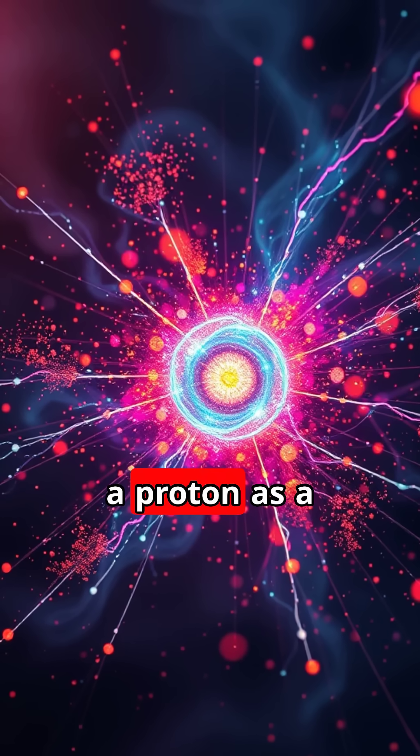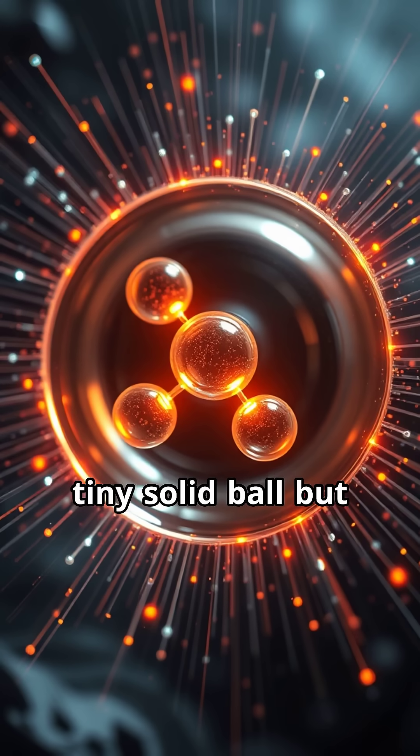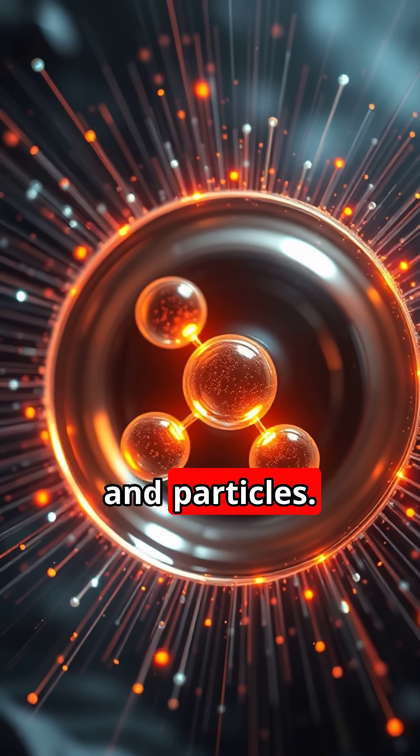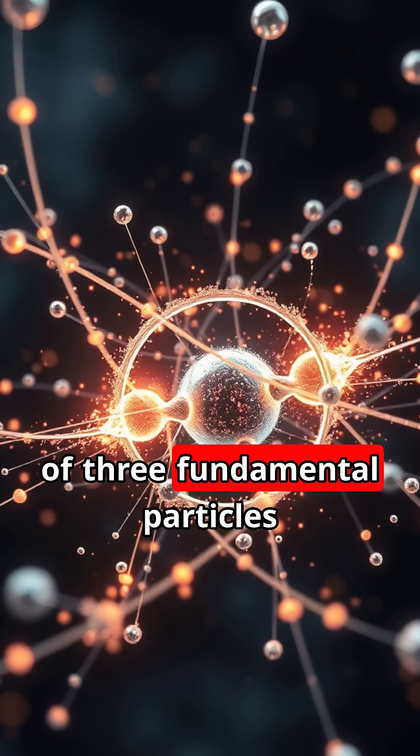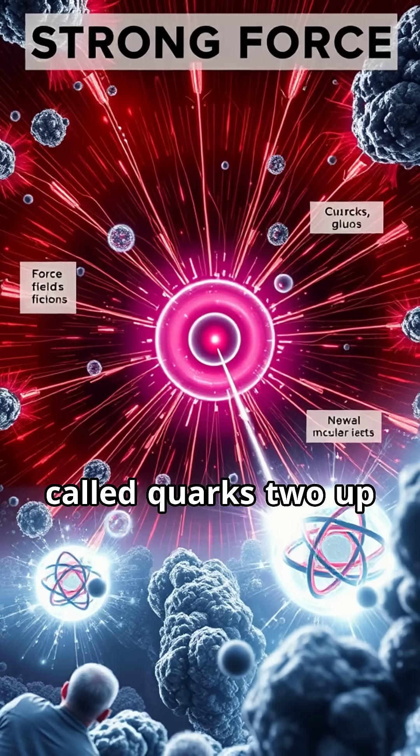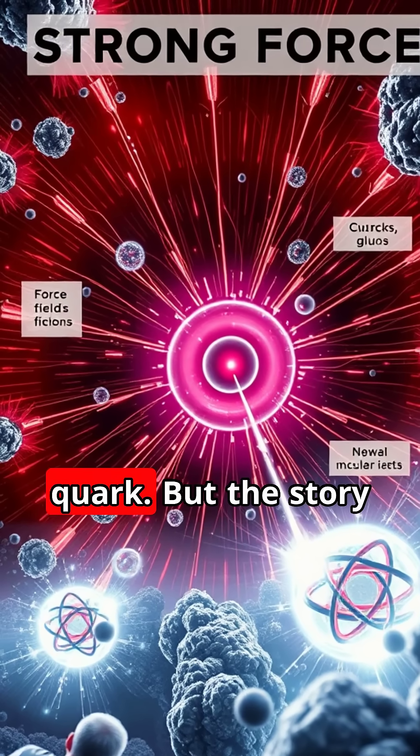You might picture a proton as a tiny, solid ball, but it's actually a swirling storm of energy and particles. At its core, a proton is made up of three fundamental particles called quarks—two up quarks and one down quark.